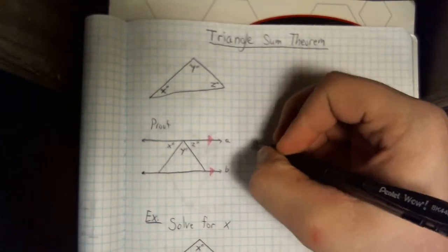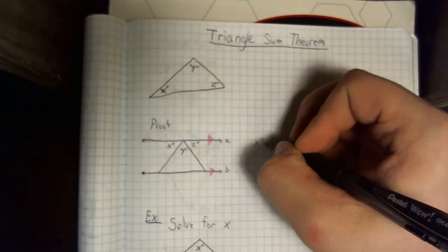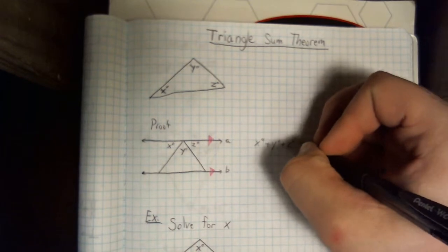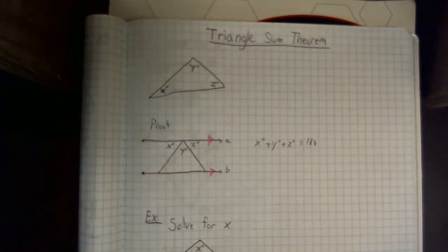So as of right now, we have x plus y plus z equaling 180 degrees. But that's the outside of the triangle.